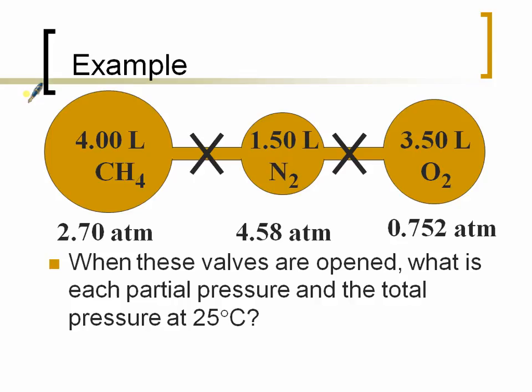Okay, this is a very classic example in gas laws. Here we have a flask that's connected. And these are actually valves here. So right now, these valves are closed. I have a certain amount of volume of this gas, certain volume and pressure for each gas when the container is closed. Well, when these valves are open, what is each partial pressure and the total pressure at 25 degrees Celsius? So my temperature is constant across the board, but my volume is now changing.